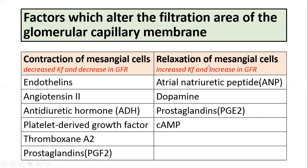Factors that cause relaxation of the mesangial cells increase the filtration area of the glomerular capillary membrane, thereby increasing the filtration coefficient and GFR. These include atrial natriuretic peptide (ANP), dopamine, prostaglandins PGE2, and cyclic AMP.